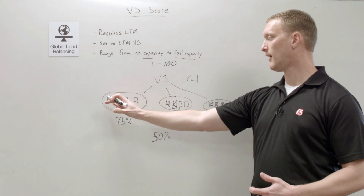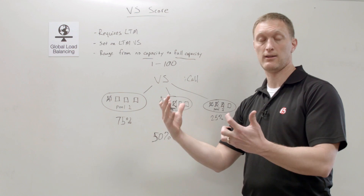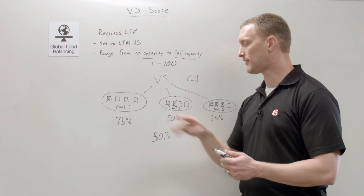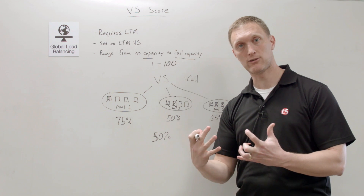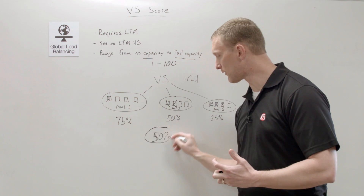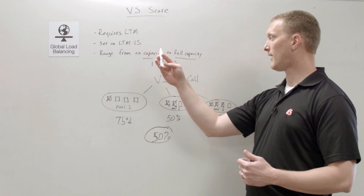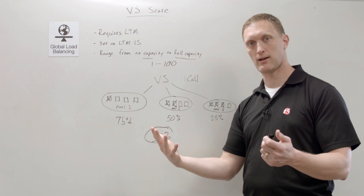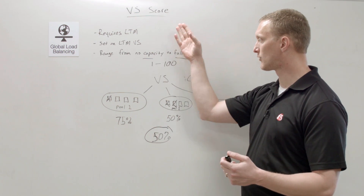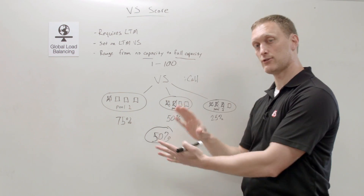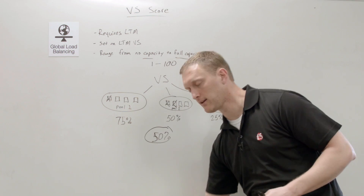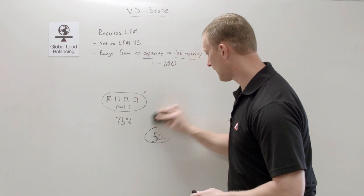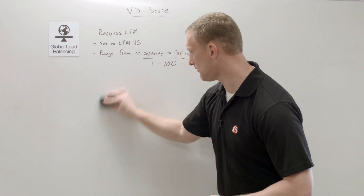In this case the iCall script goes out, calculates a virtual server capacity score for each pool, and comes up with an overall number — say 50% — which becomes the virtual server score. That's one example of using an iCall script with virtual server capacity, which we covered in a previous video.